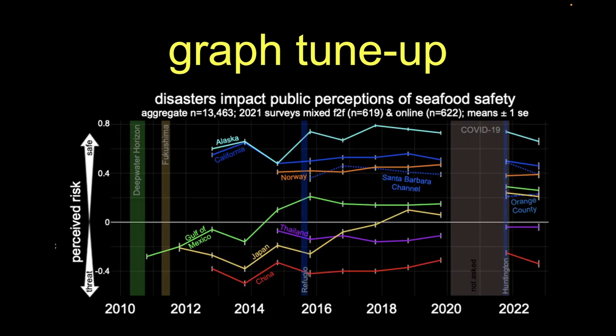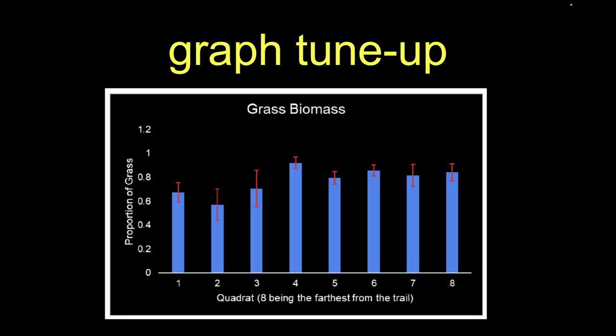For example, here's one where we have year here, we don't have year labeled. And this is a relative measure, in this case it's perceived risk. And the various things are labeled, so this is Alaska, this is Norway. In here we say means plus or minus one standard error, so we know that those error bars aren't a range, they're not a coefficient of variation, they're a standard error. And again, you guys are free to choose whichever characterization of the variance you choose, but you just got to make sure you tell us what it is. So let's look at this.